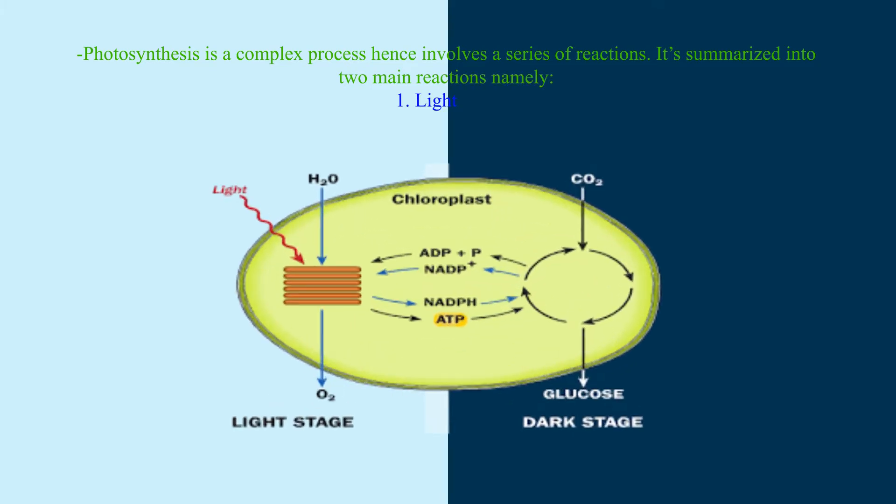Photosynthesis is a complex process, hence it involves a series of reactions. It's summarized into two main reactions, namely: 1. Light stage, 2. Dark stage.